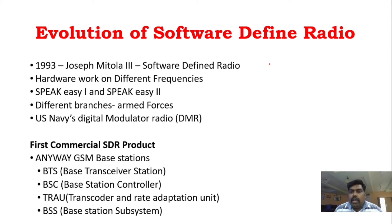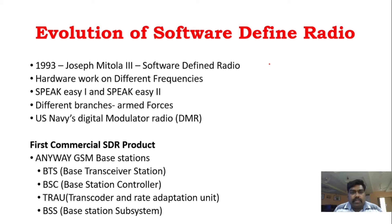If you use a reconfigurable antenna — an antenna that works across all frequencies — it can be reconfigured so that you can connect all these devices: Wi-Fi, printer, and other wireless techniques. This is called reconfigurable radio, and it is one of the examples of software defined radio.